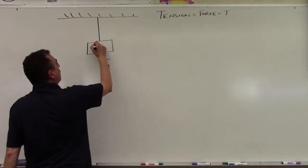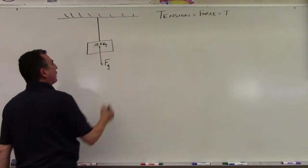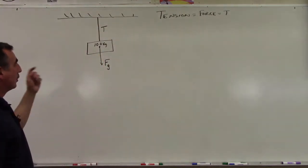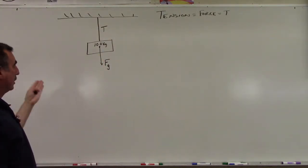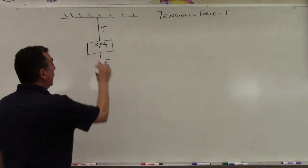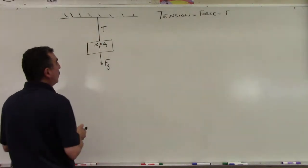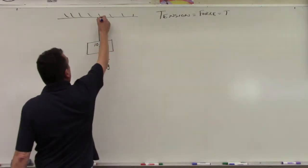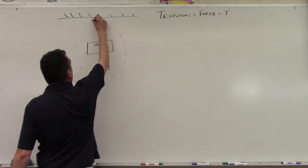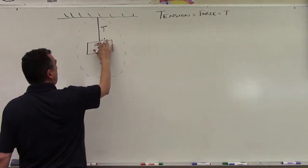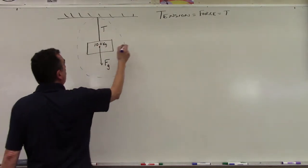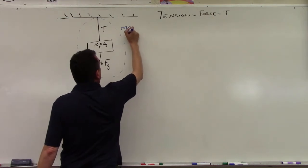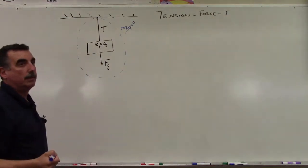Let's make this a 10 kilogram mass pulling down, and the cord is not stretching — it just has a tension in it. Because it's on a ceiling, this whole system is not moving. The force of gravity and tension are not in motion, so the total net force on this object will have an acceleration equal to zero.